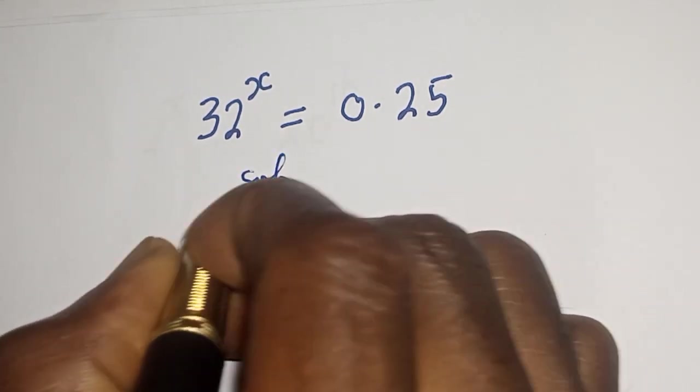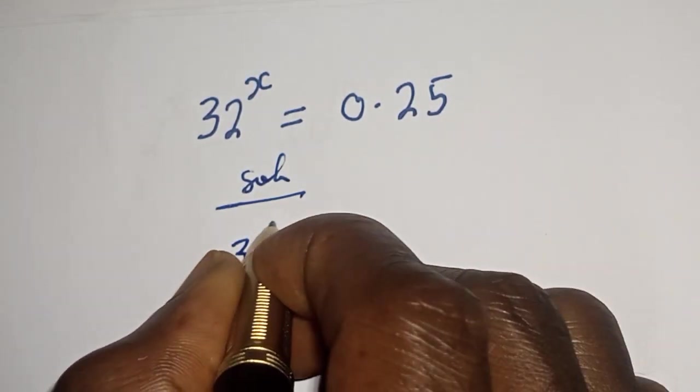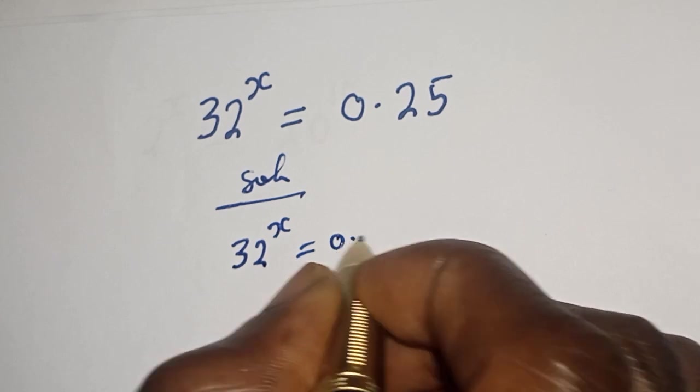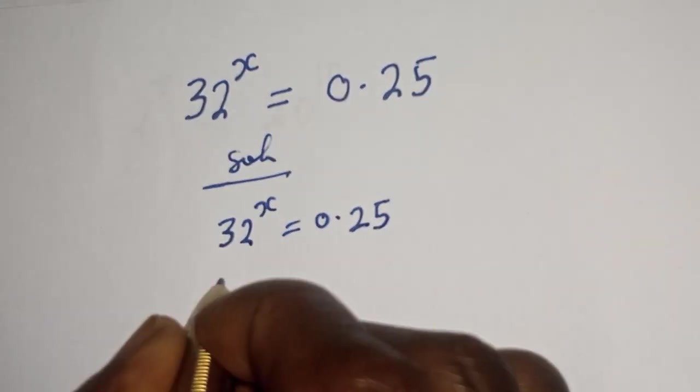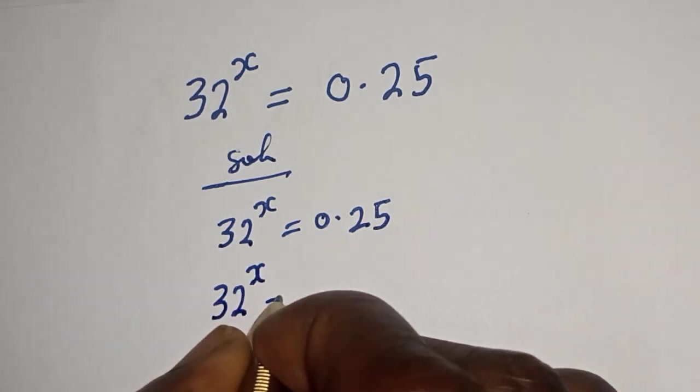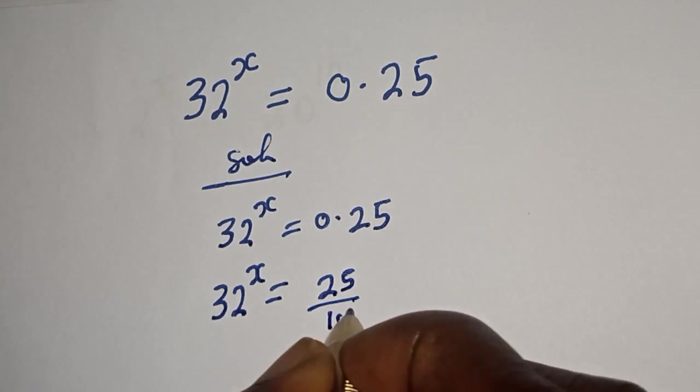Solution. You have 32 raised to power s equals 0.25, then 32 raised to power s equals 25 over 100.